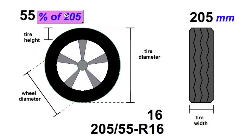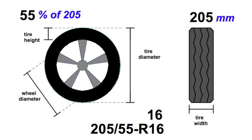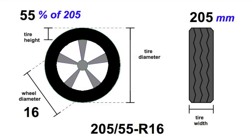The 55 is in percent, or you could say an aspect ratio. This is 55% of the tire's width, which in this case is 205. See how this works. And the wheel diameter — finally something we know because it's in inches, 16 inches. Something we're all familiar with. So we've got these three numbers, and we're going to put them together to find the tire diameter.